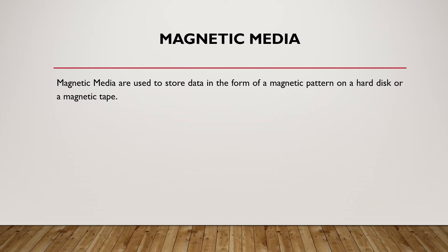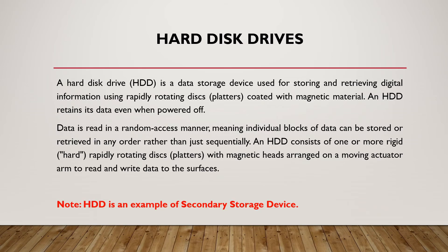Magnetic media is a type of medium used for storage. Magnetic media are used to store data in the form of a magnetic pattern on a hard disk or a magnetic tape. A hard disk drive is a data storage device used for storing and retrieving digital information using rapidly rotating disks, known as platters, coated with magnetic material. An HDD retains data even when the power is switched off. Data is read in a random access manner, meaning individual blocks of data can be stored or retrieved in any order rather than just sequentially. An HDD consists of one or more rigid rapidly rotating disks with magnetic heads arranged on a moving actuator arm to read and write data to the surfaces. HDD is an example of a secondary storage device.